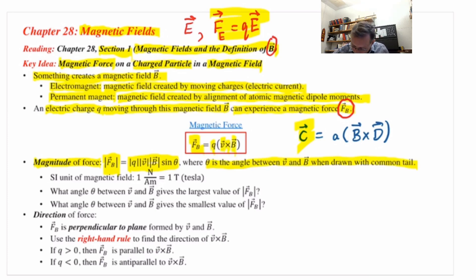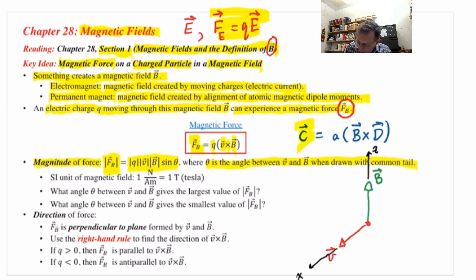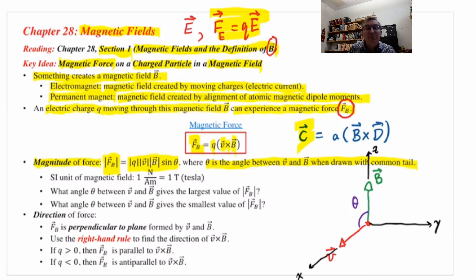In the previous animation, the magnetic field pointed in plus Z and the velocity was along X, so theta was 90 degrees. The theta is the angle between V and B drawn with a common tail — it doesn't have to be 90. Because of the sine theta factor: if theta is zero, the force is zero; if theta is 90, the force is maximum.